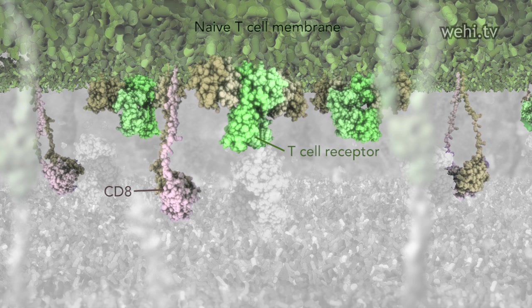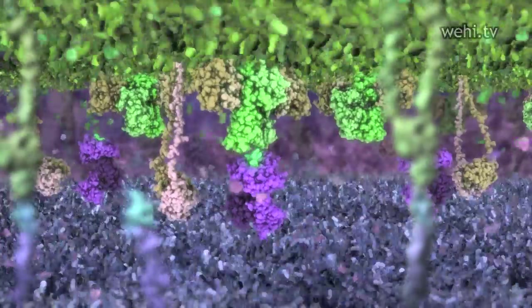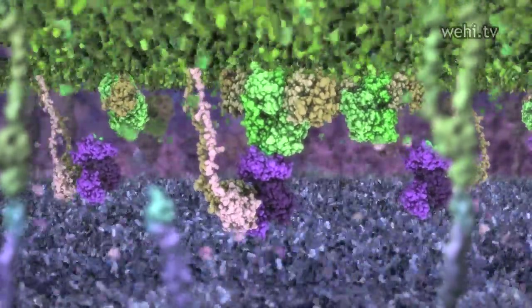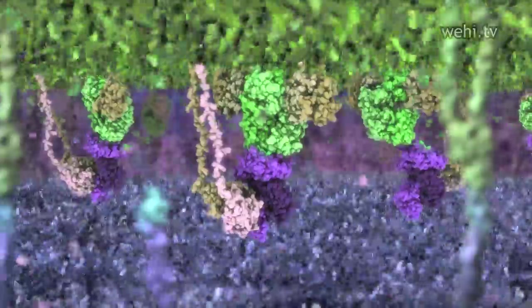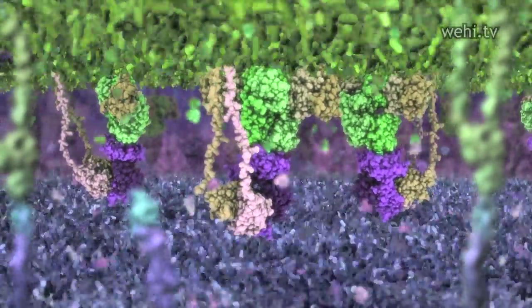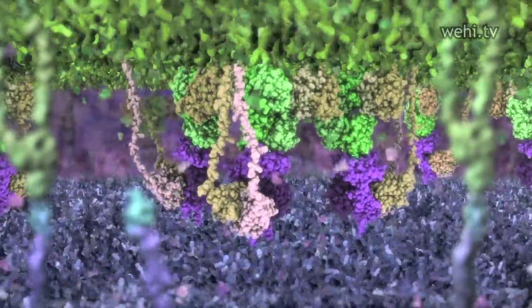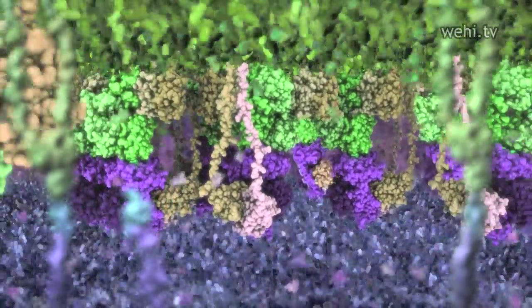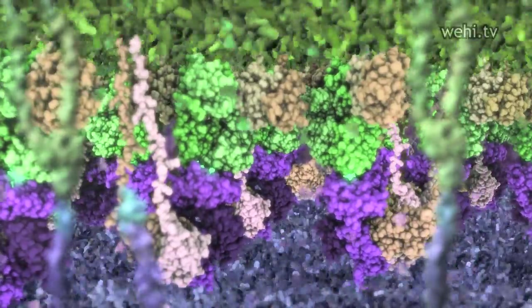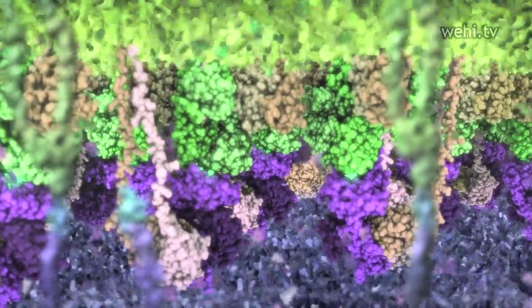Each naive T-cell produces a unique receptor that can recognize different virus-peptide MHC combinations. The presence of the CD8 molecule defines this subclass of T-cells. The receptors on this particular T-cell bind to the virus peptide MHC complex. Coreceptor CD8 binds the complex, causing receptor clustering.